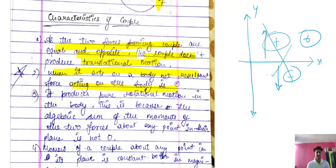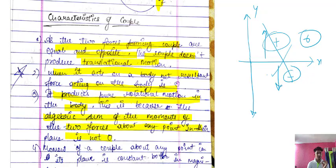Third: a couple produces pure rotational motion in the body. This rotation produced by a couple force is pure rotational motion. This is because the algebraic sum of the moments of the two forces about any point in their plane is not zero. If a force is in a different direction, the moment will also produce the opposite direction.